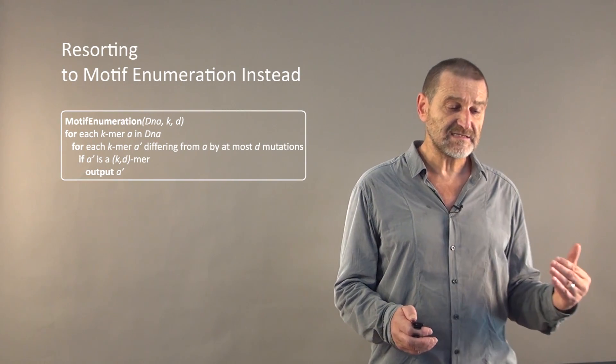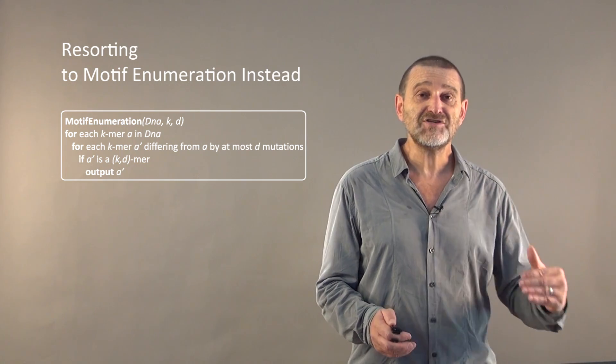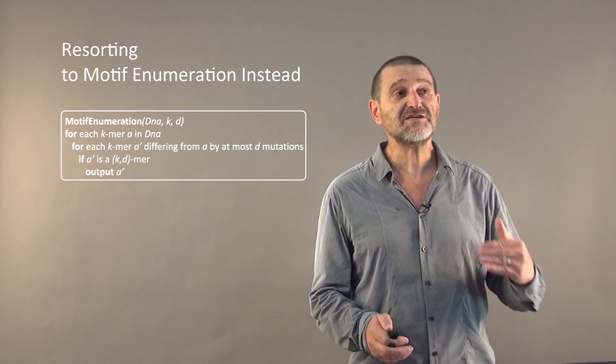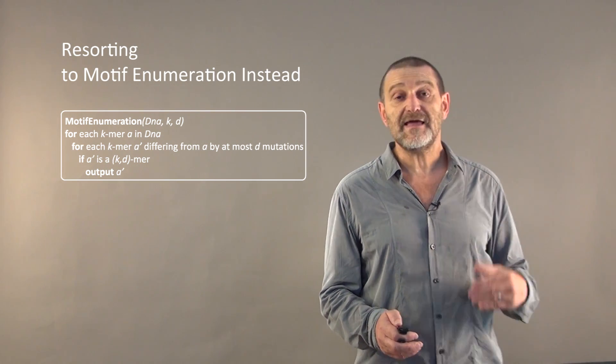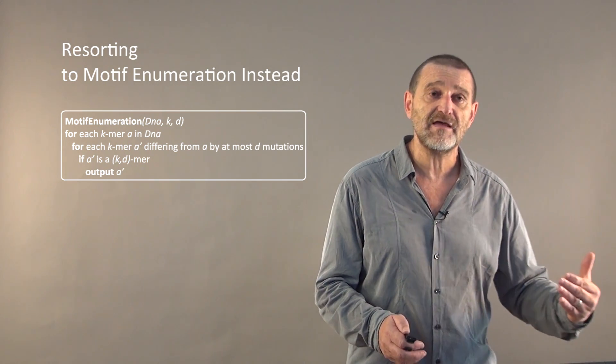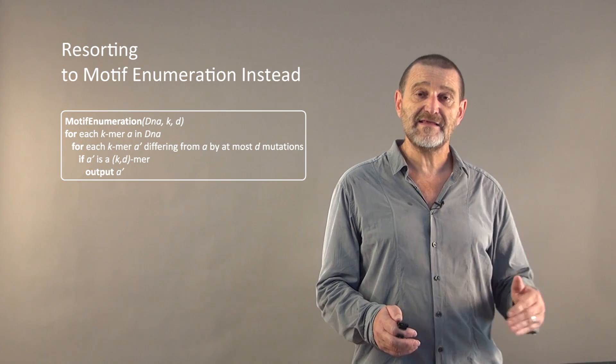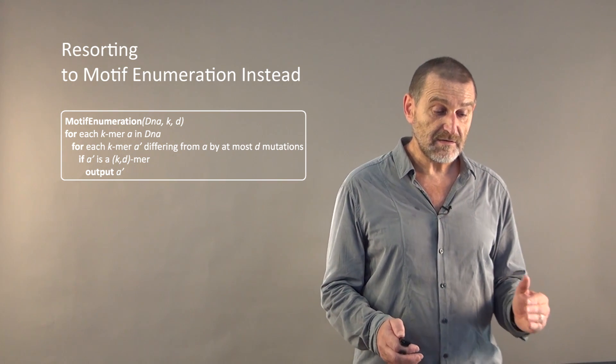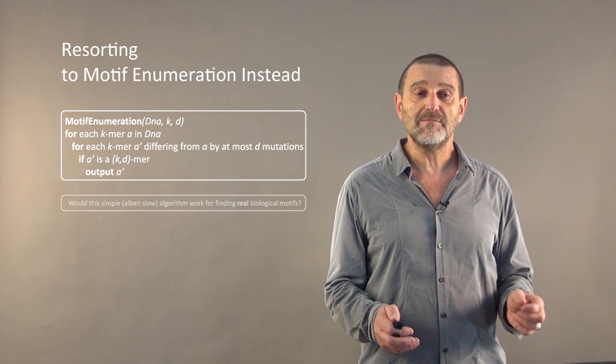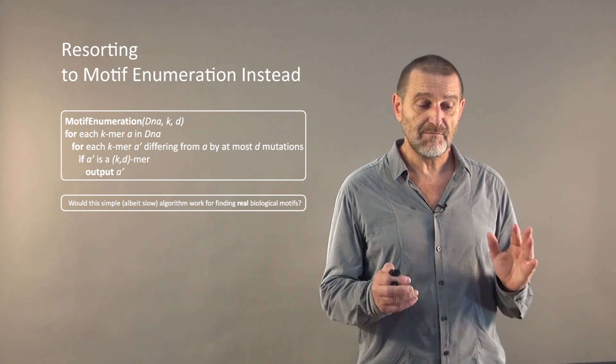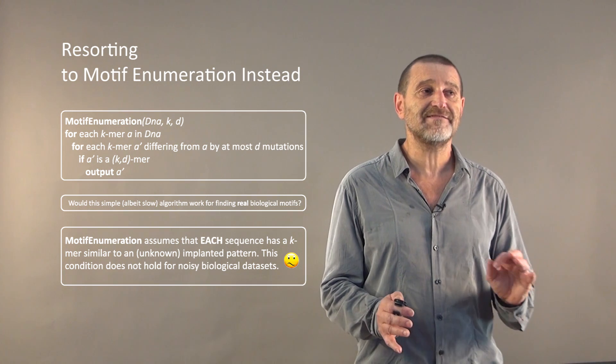That's why motif enumeration algorithm would work like this. We will start from each k-mer from a sequence, let's call it A. For each such k-mer, let's generate all possible mutations with up to D nucleotides mutated. For each such mutated k-mer A prime, let's check whether it appears as a k-d motif in the string. That will work, but the question is it will be slow, but definitely will work if k is small. But the question we should ask: would it solve the real biological problem? Unfortunately, it won't work because our model for implanting patterns is not very biological. It doesn't properly reflect biological reality.